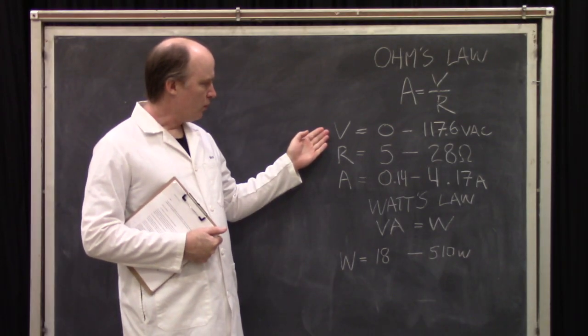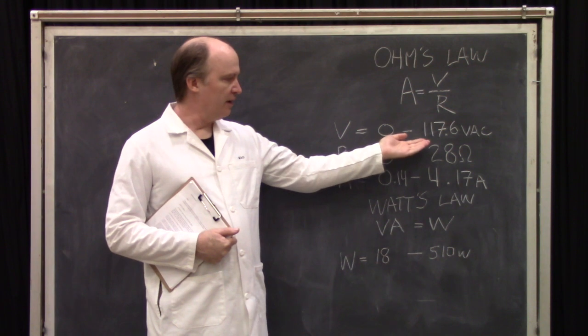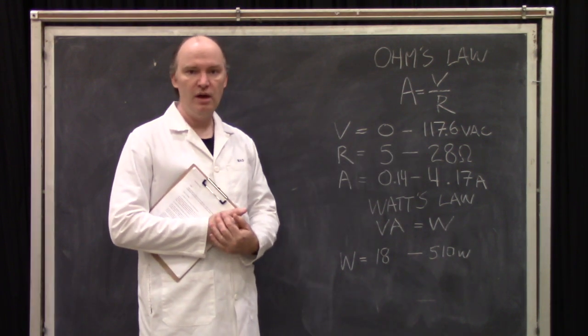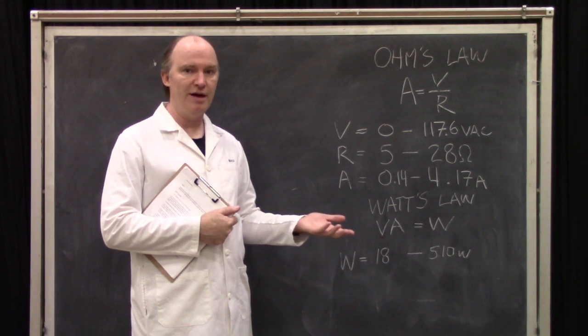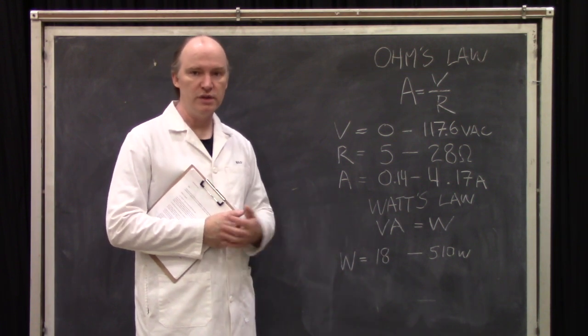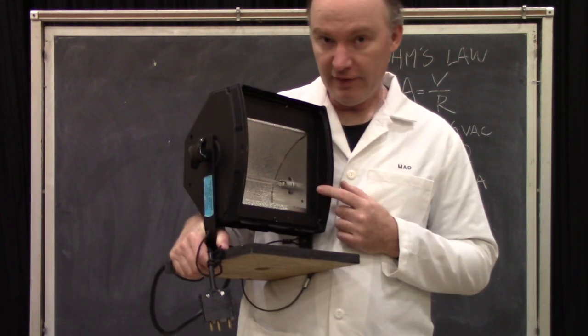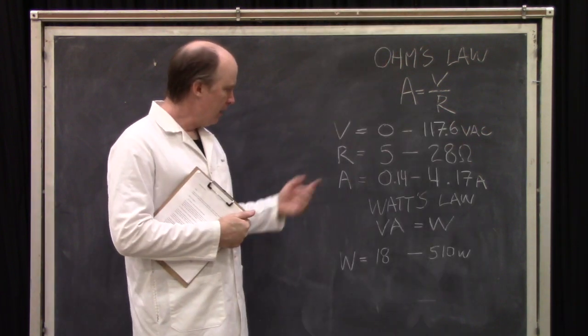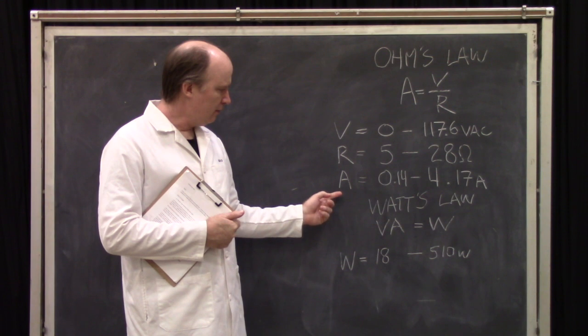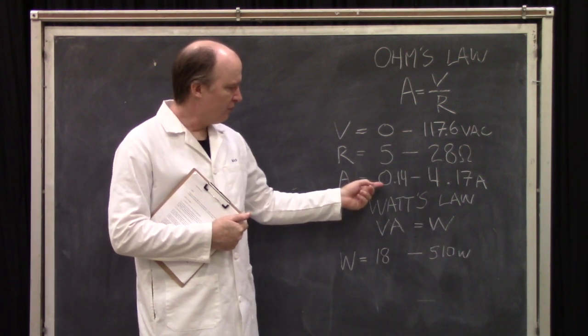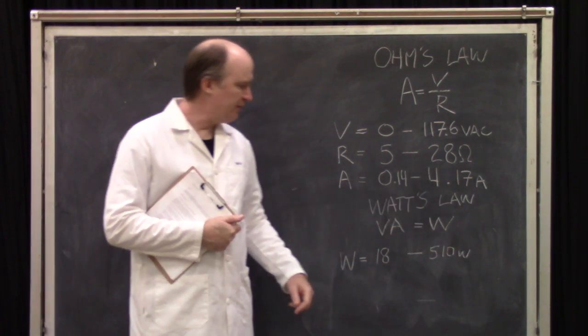The voltage ranges between 0 and in this case 117.6 volts, and the resistance, this is the same single cell 500 watt cyclight that I used for the resistance dimmer demo. Isn't it adorable? Ranges from 5 to 28 ohms, and the amperage thus ranges from 0.14 to 4.17.